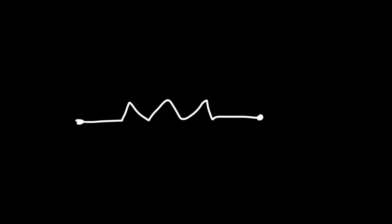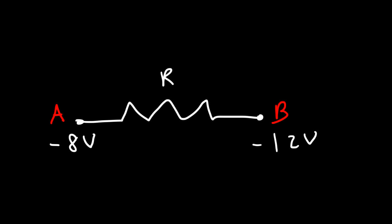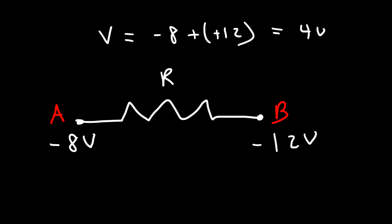Let's work on one more example. Point A has a potential of negative 8 volts and point B is negative 12 volts. What is the voltage across this resistor? The voltage is the difference between these two values: negative 8 minus negative 12. The two negative signs become positive, so negative 8 plus 12 is 4 — the voltage is 4 volts.